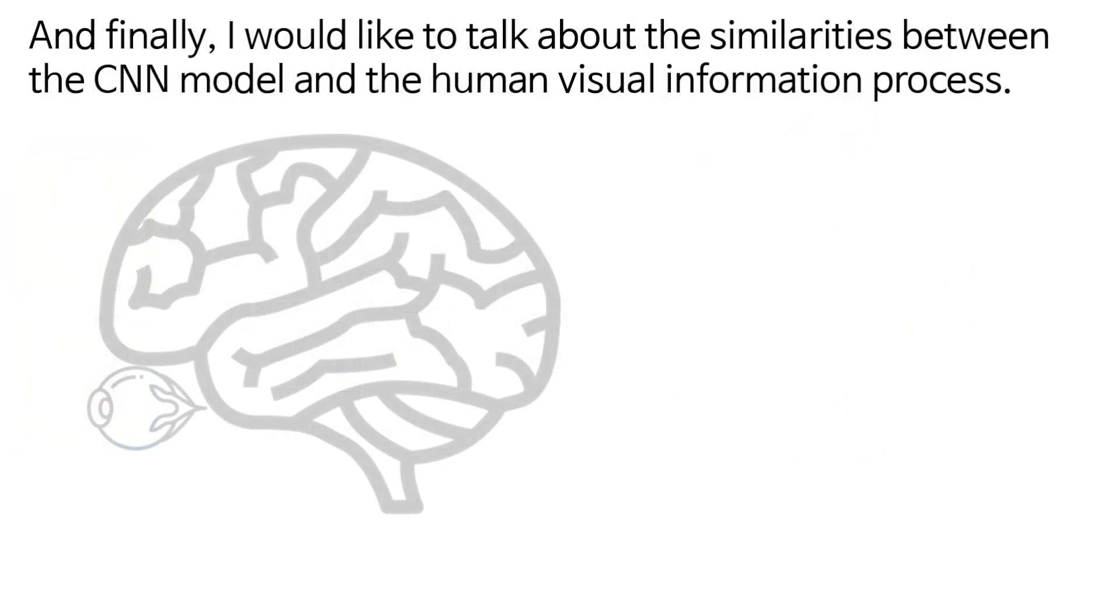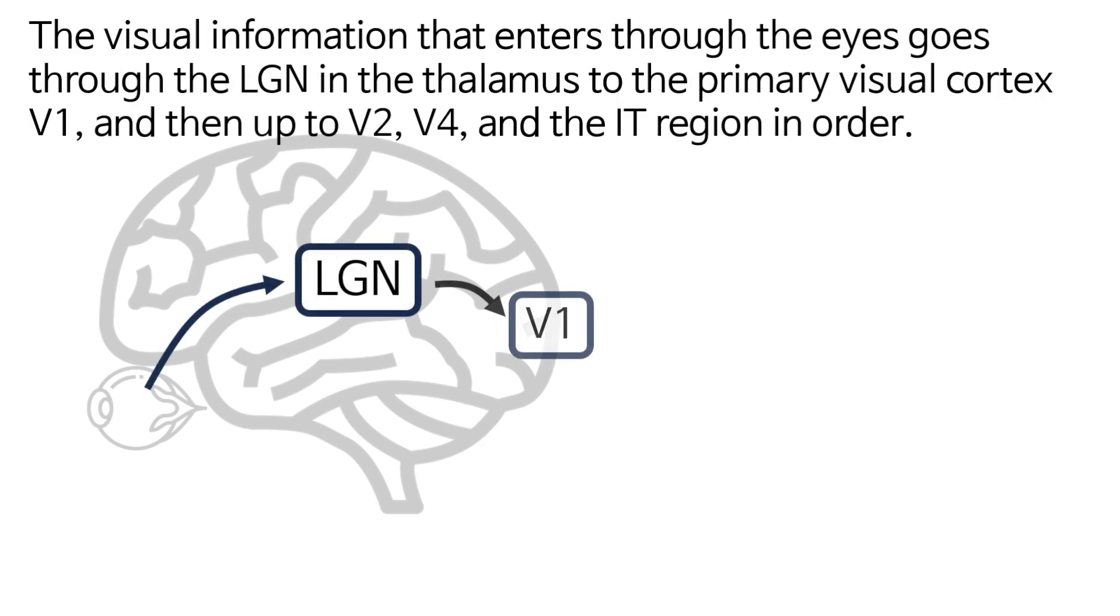And finally, I would like to talk about the similarity between the CNN model and the human visual information process. The visual information that enters through the eyes goes through the LGN and thalamus to the primary visual cortex V1 and then up to V2, V4, and the IT region in order.